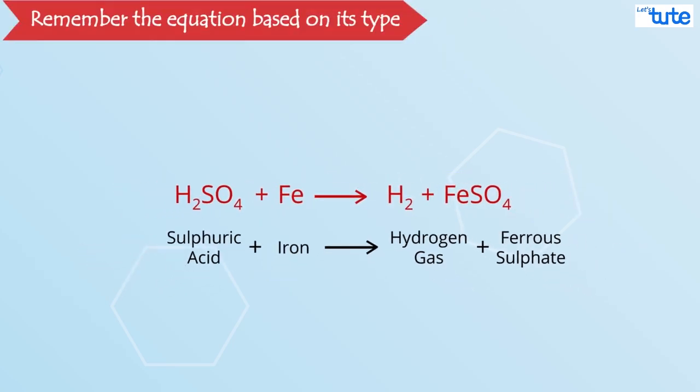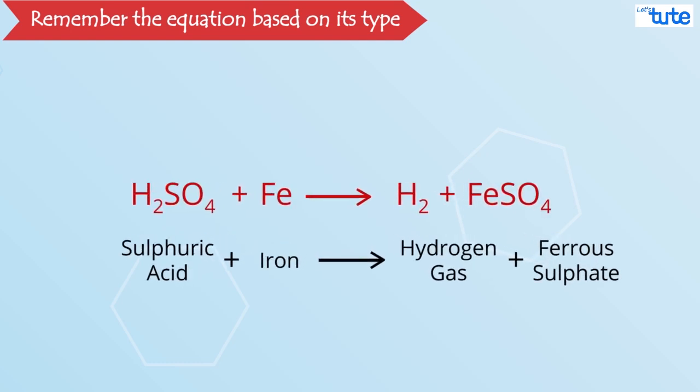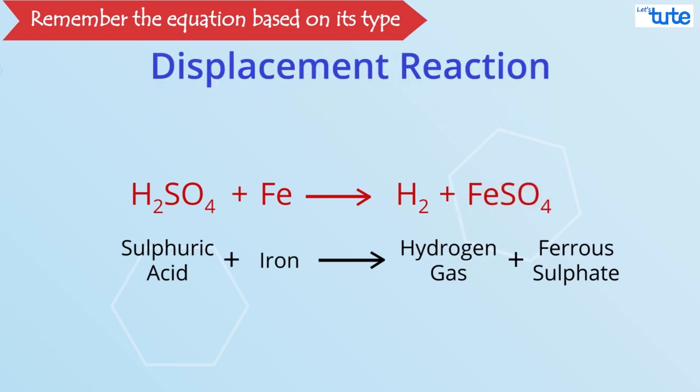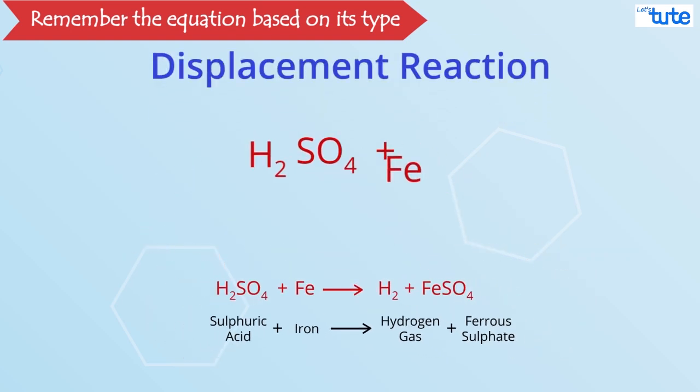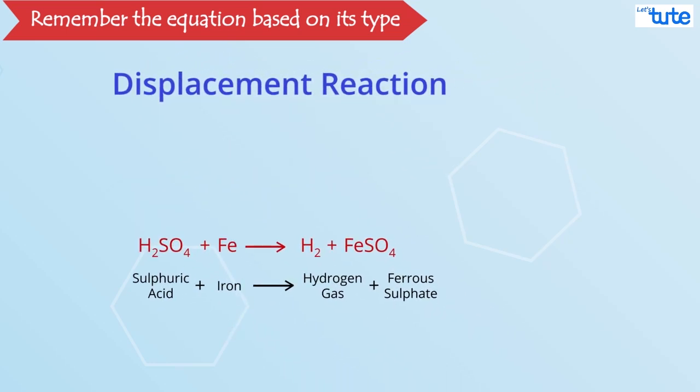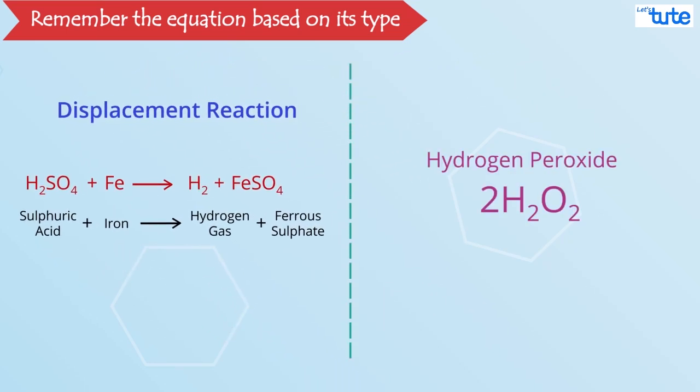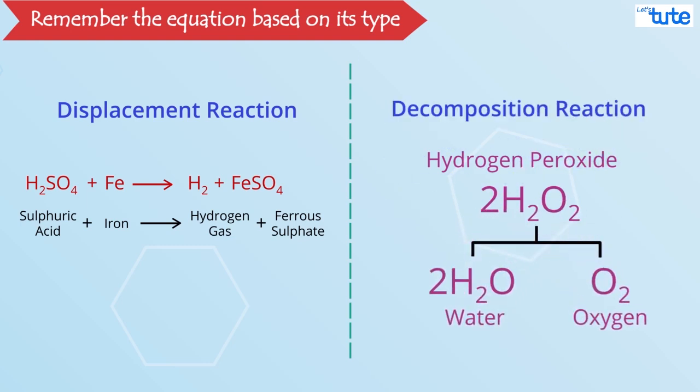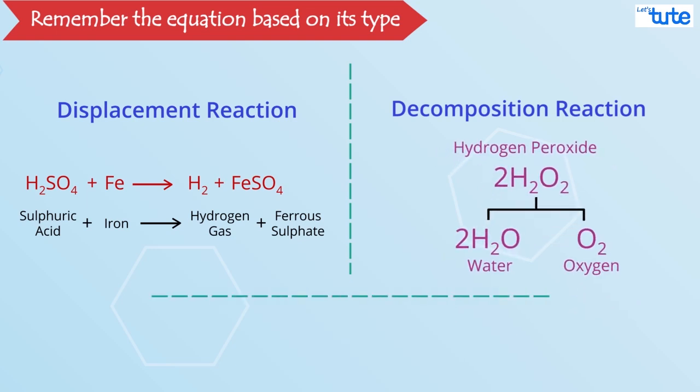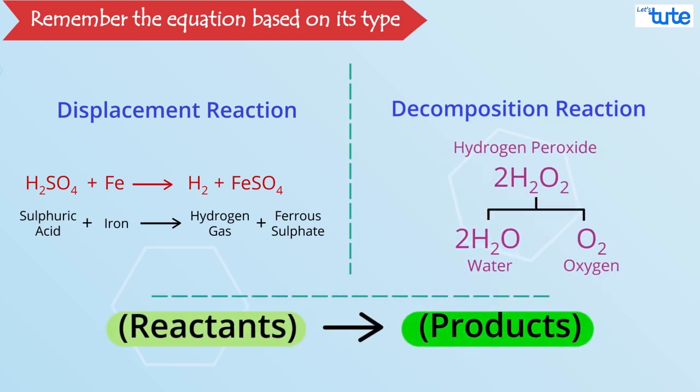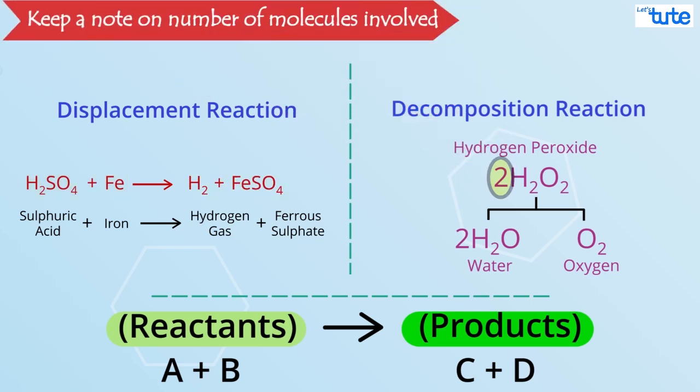Remember the equation based on its type. Like in the earlier example, the reaction of sulphuric acid forming ferrous sulphate is a displacement reaction. If you carefully see, hydrogen gas is getting displaced. Now if you take another reaction, hydrogen peroxide, it decomposes, breaks down to give water and oxygen. While learning the equation, learn it in the form of reactants and products. Like A plus B is reacting to give me C plus D or at times just C in that way. Keep a note of the number of molecules involved or learn the logic for balancing them.